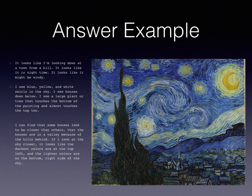Three: I can find that some houses look closer than others, that the houses are in a valley because of the hills behind. If I look at the sky closer, it looks like the darkest colors are at the top left and the lighter colors are on the bottom right side of the sky.